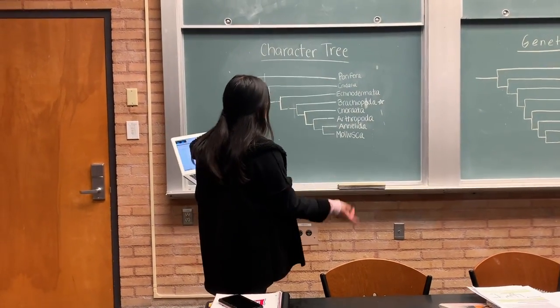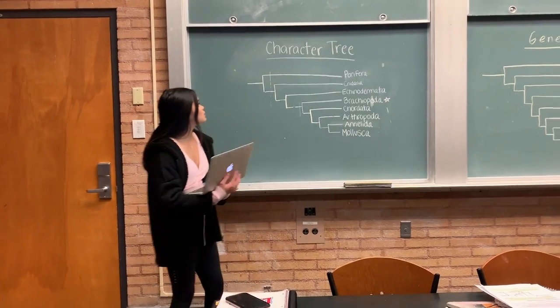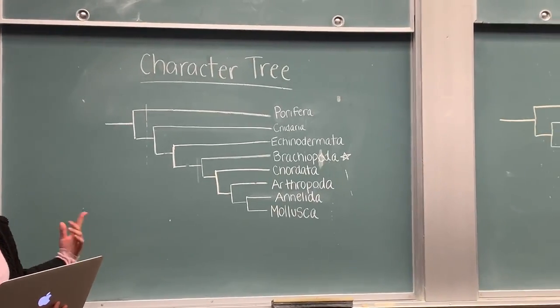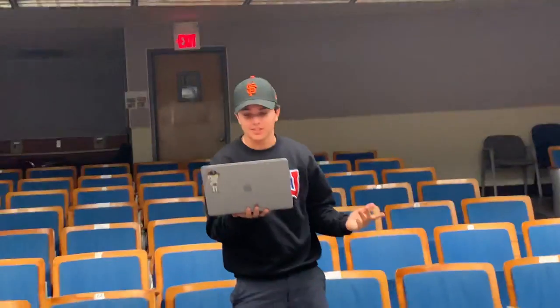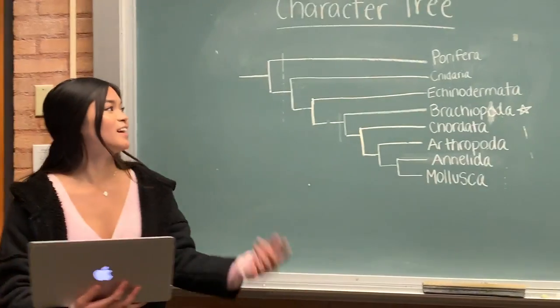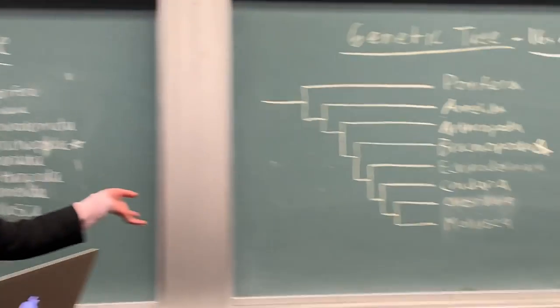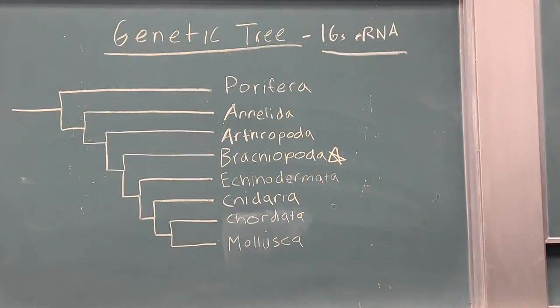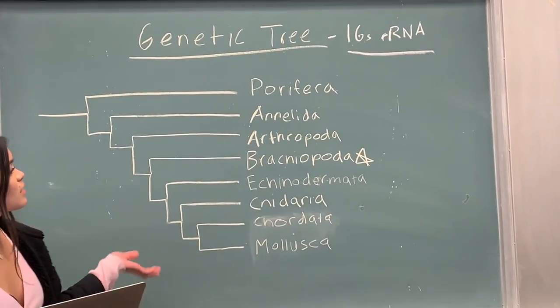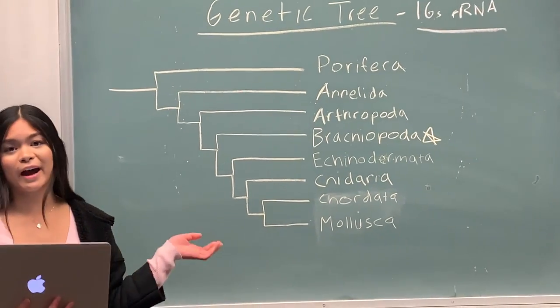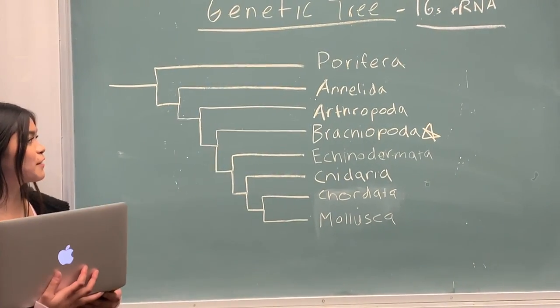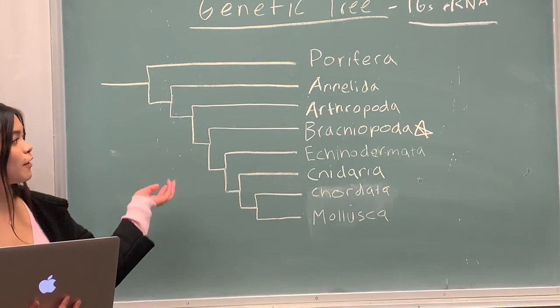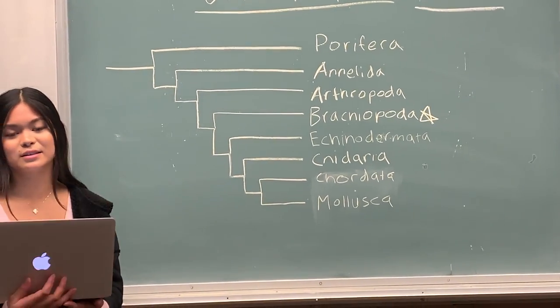So here are the two phylogenetic trees we generated in lab. This one is based off of character traits like centralization, locomotion, number of appendages, and body systems. And this one is based on genetic sequencing — that's the main reason why they differ. If you look at where Brachiopata is placed, compared to the character traits tree, this one is more thorough and a more accurate representation of the evolutionary history of all these taxa because they're based on nucleotides.